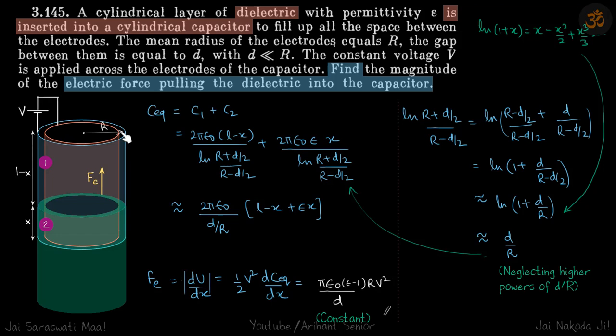The gap between them is D, so outside radius is R + D/2, inside radius is R - D/2. Plus the capacitance of the second part: 2πε₀εX / ln((R + D/2)/(R - D/2)).